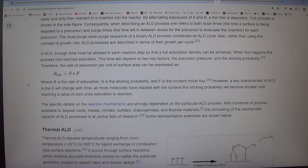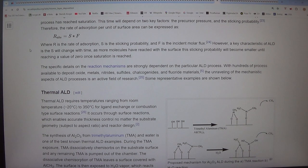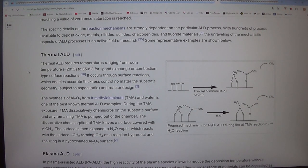Therefore, the rate of adsorption per unit of surface area can be expressed as R_abs equals S asterisk F, where R is the rate of adsorption, S is the sticking probability, and F is the incident molar flux. However, a key characteristic of ALD is that S will change with time. As more molecules have reacted with the surface, this sticking probability will become smaller until reaching a value of 0 once saturation is reached. The specific details on the reaction mechanisms are strongly dependent on the particular ALD process. With hundreds of processes available to deposit oxides, metals, nitrides, sulfides, chalcogenides, and fluoride materials, the unraveling of the mechanistic aspects of ALD processes is an active field of research.